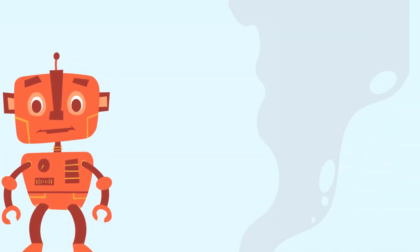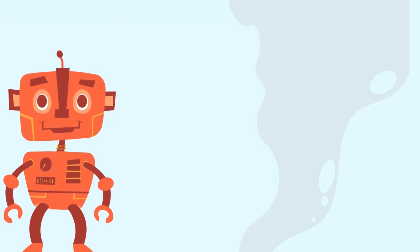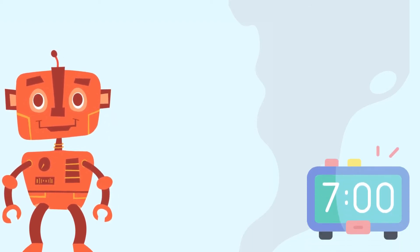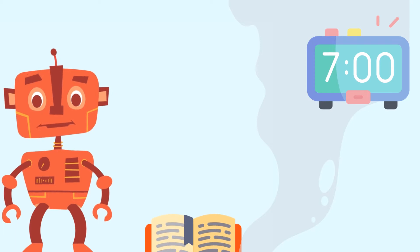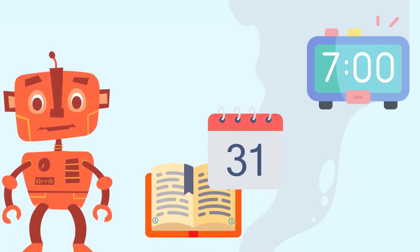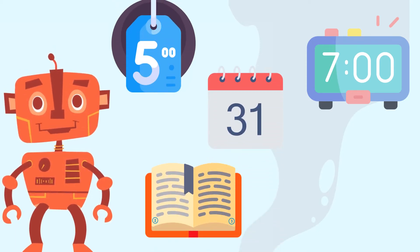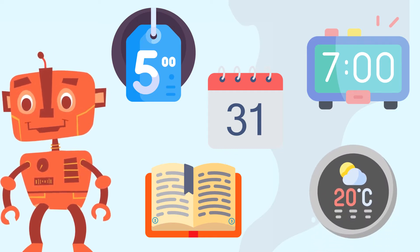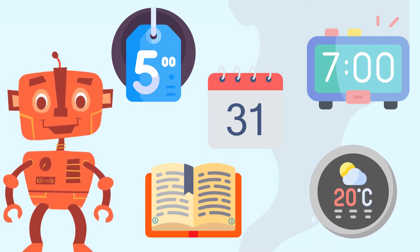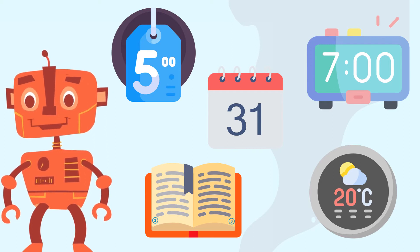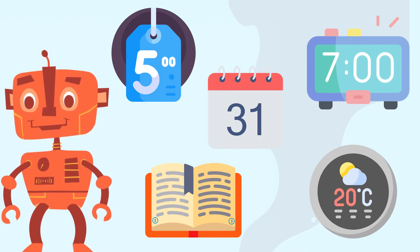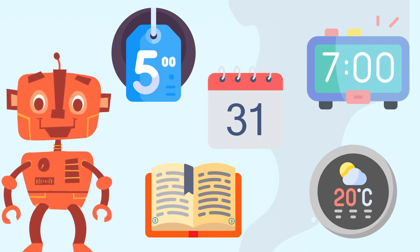Numbers are seen and used everywhere. We use them all the time in our daily lives. We see them as digits on clocks, as page numbers in books, as dates on calendars, as prices in stores, and as temperature readings on thermostats. As you can see, numbers are all around us and they come in all sorts of forms. Let us take a look at a few more examples of where we can find numbers.